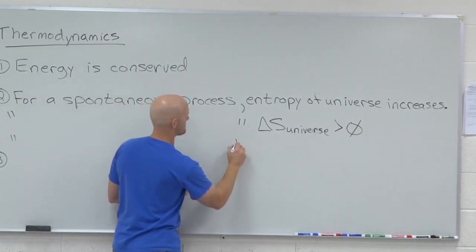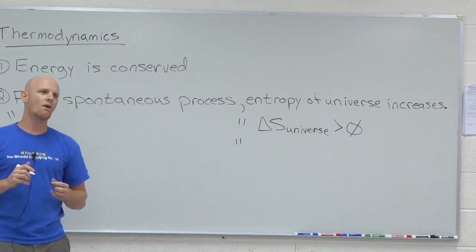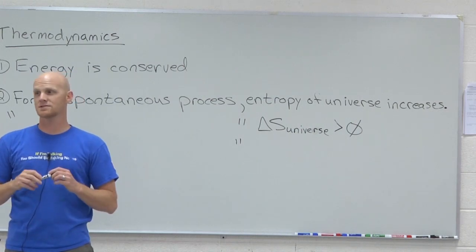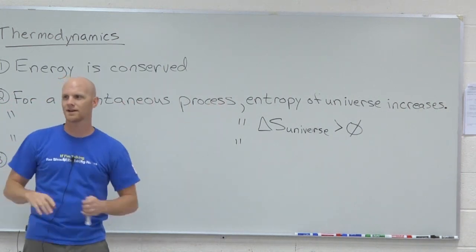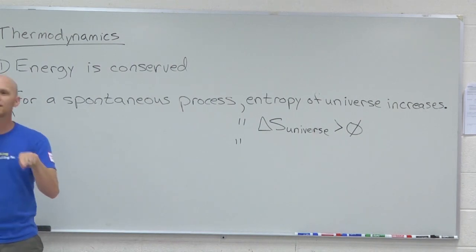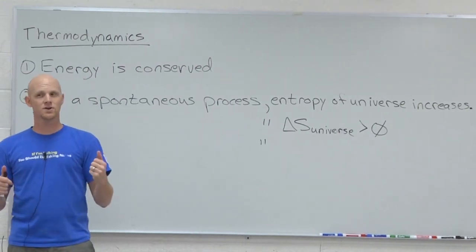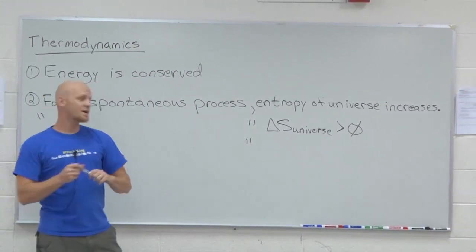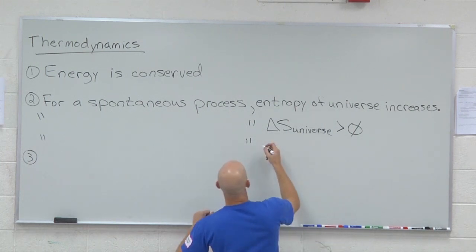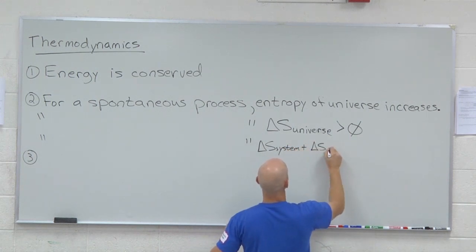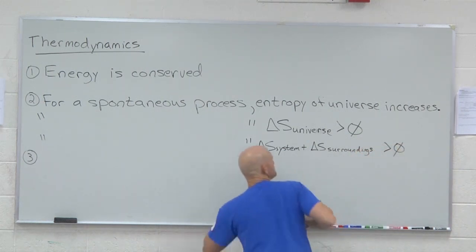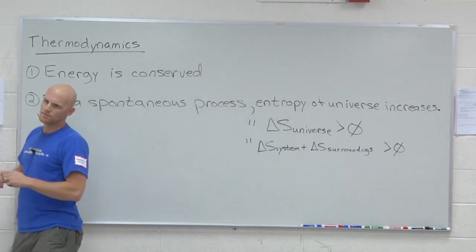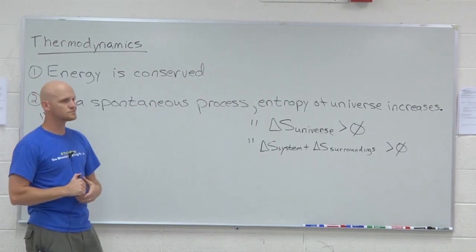And we can take this one more way for a spontaneous process. So it turns out there are two things in the universe, and only two. And if you've ever been in love, you know this. There's two things in the universe, the person you're in love with and everything else, right? So in chemistry, we kind of look at the same thing. There's two things in the universe, what you're looking at and everything else. And what you're looking at is called the system, and everything else is the surroundings. So another way to say the second law of thermodynamics is to say, for a spontaneous process, the delta S of the system plus the delta S of the surroundings is positive.